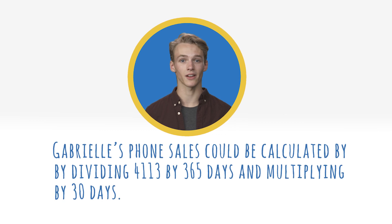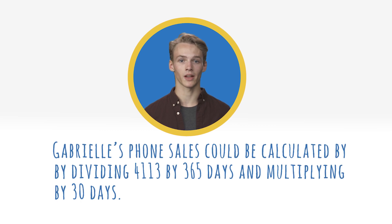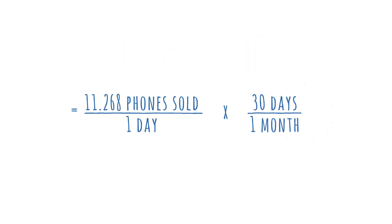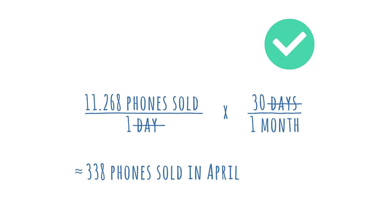Fourth: Gabrielle's phone sales could be calculated by dividing 4,113 by 365 days and then multiplying by 30 days. Dividing by 365 days assumes Gabrielle sold the same number of phones each day. This approach results in an estimated 338 phones sold in April by Gabrielle, which is fewer phones than I calculated. I see why some sales team members would want to use this approach — this is a valid assumption, so I will select this one too.